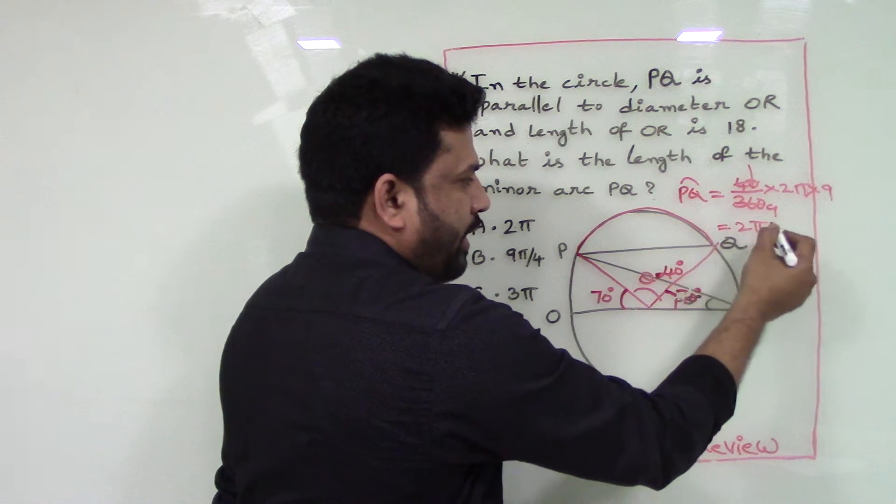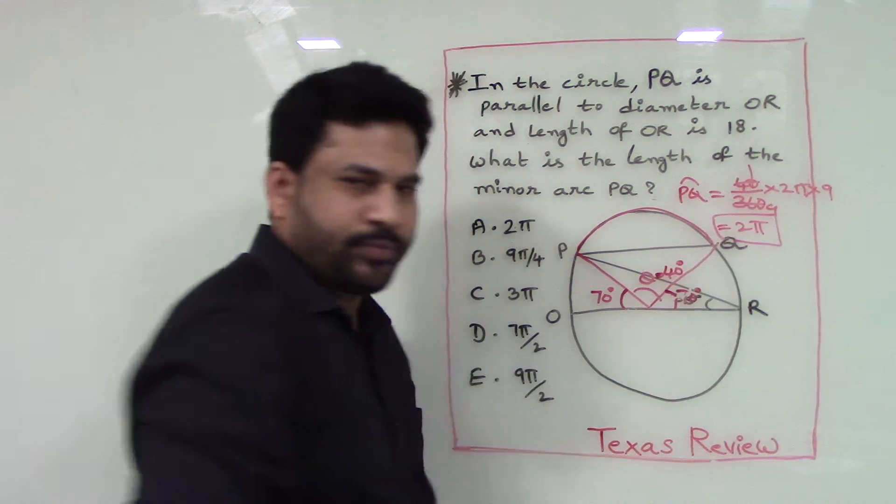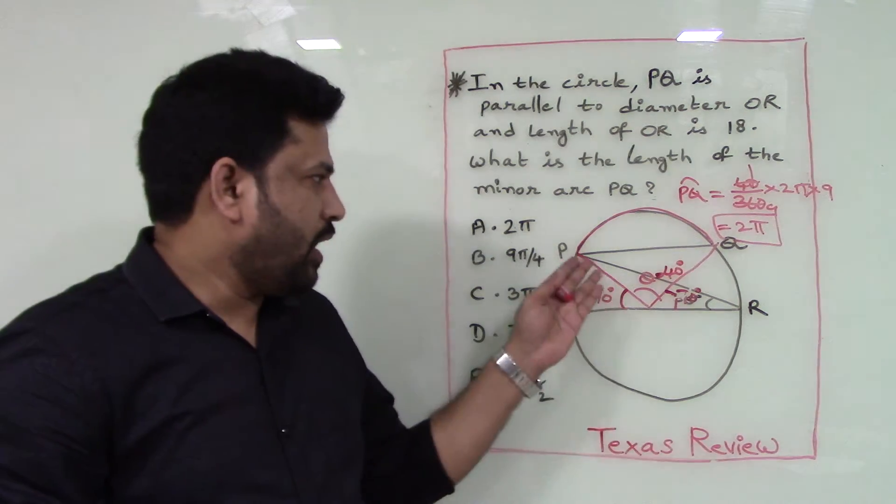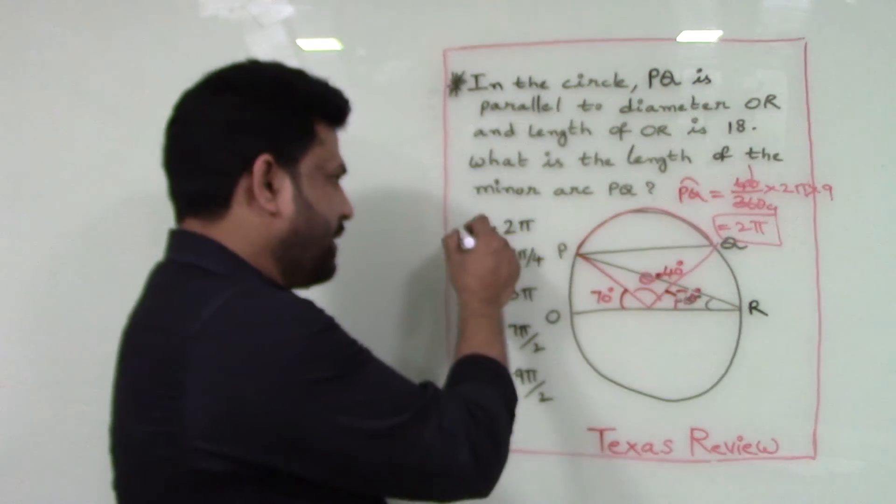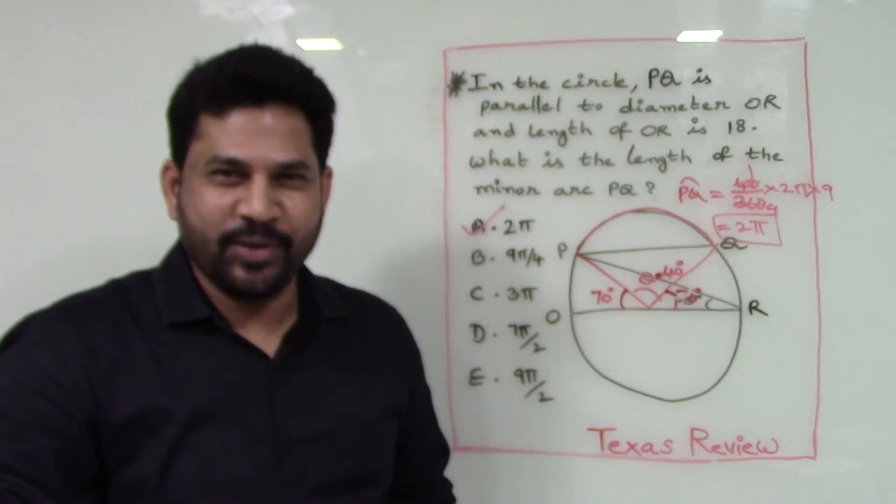So the length of the arc PQ here is 2π. Thank you.